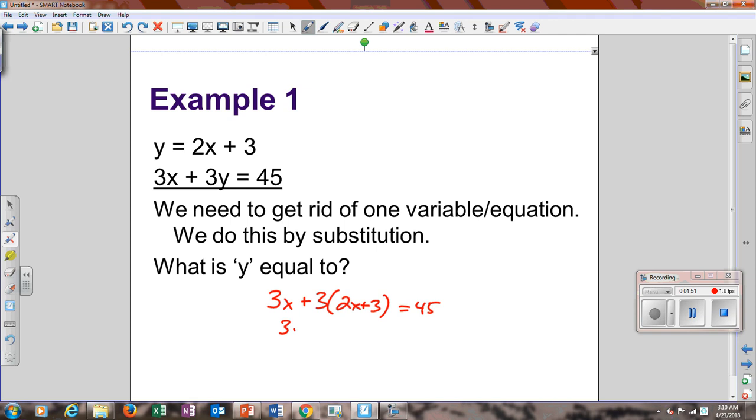Distribute that 3. You get 3x plus 6x plus 9 equals 45. Combine your like terms. Gives you 9x plus 9 equals 45. Subtract the 9. You get 9x equals 36. Divide by 9, x equals 4.